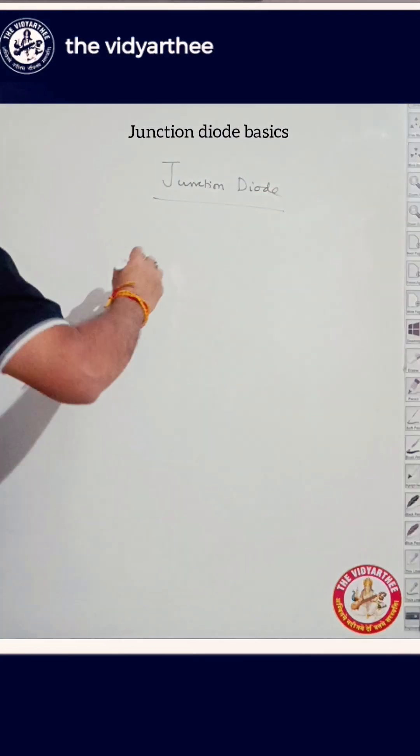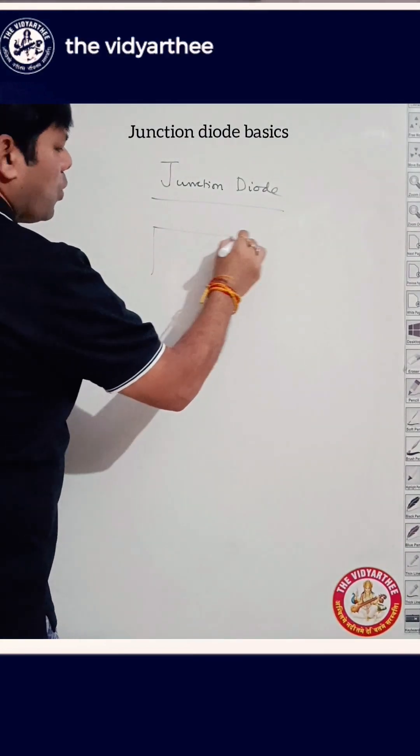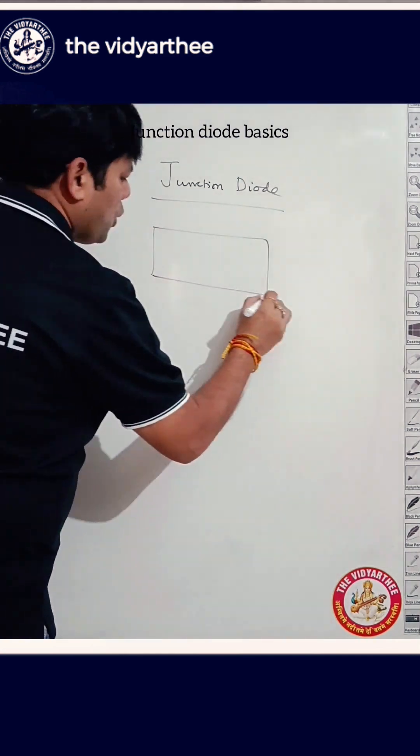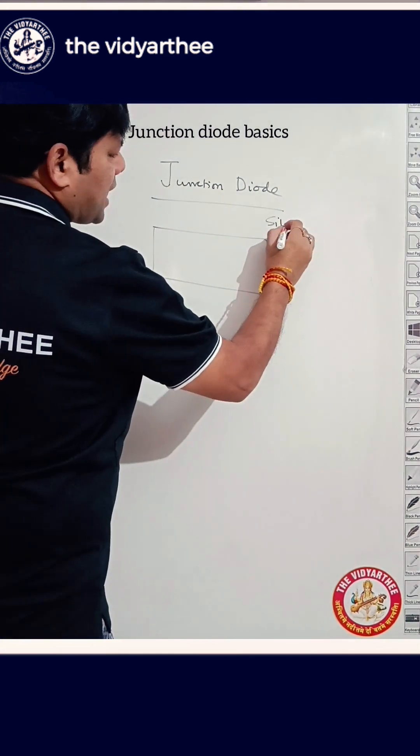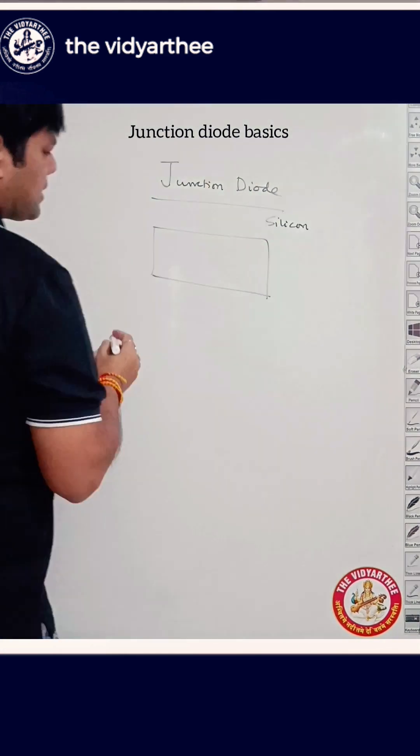So, what is the junction line? That means we have one pure semiconductor like silicon. We have got one pure semiconductor.